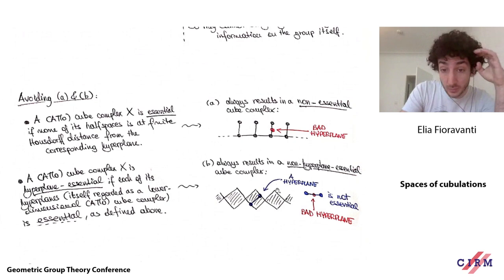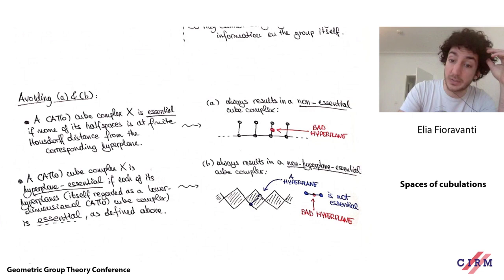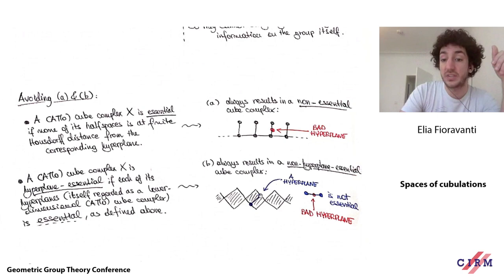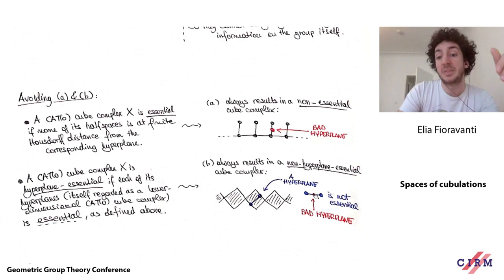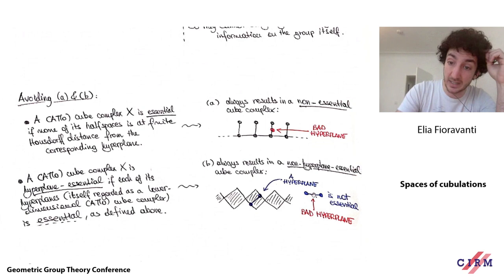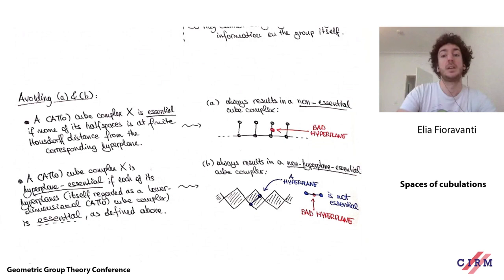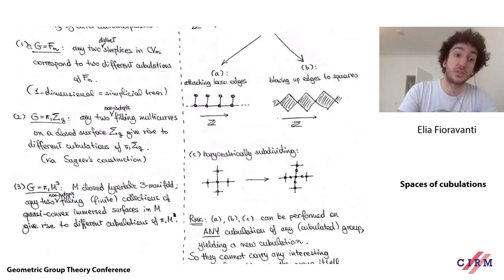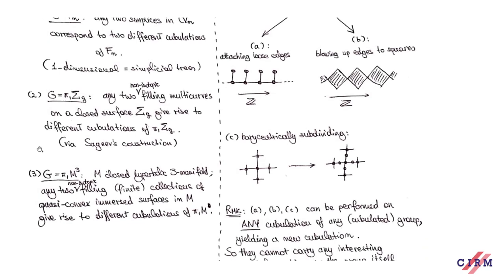In the picture with the chain of squares: hyperplanes are segments parallel to the sides of the squares going through the middle. This hyperplane does not violate essentiality of the whole complex because you can move infinitely far left and right. But if you look at the essentiality of the hyperplane itself, the cubical structure on the hyperplane is just a segment — two vertices joined by an edge — and this segment has one hyperplane whose two sides are bounded. That's bad. All the cubulations in examples one, two, and three are essential and hyperplane-essential, so these are not artificial notions.